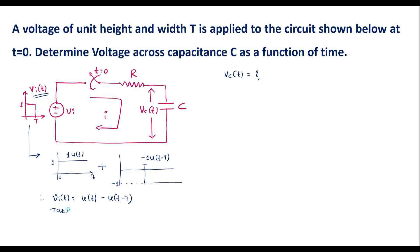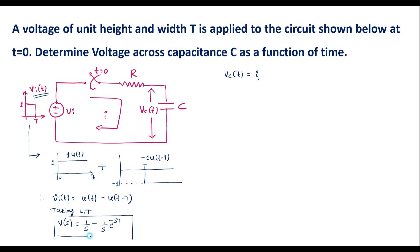Taking the Laplace transform, I can write V(s) = 1/s − (1/s)e^(−sτ). This is the input signal V(s) represented in the Laplace domain. We will call this equation 1.